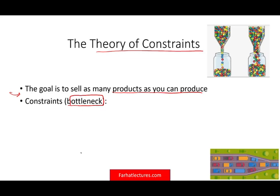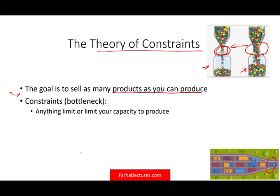Why do we call it a bottleneck? Think of a bottle that's upside down and we're trying to get the M&Ms out of two bottles. Notice one bottleneck is larger than the other, so you can fill one jar faster because its bottleneck is larger. When the bottleneck is smaller, you come to a standstill — something is limiting your production. Same thing as traffic where three lanes merge into one lane: something is slowing things down. Anything that limits your production is called a constraint or a bottleneck.